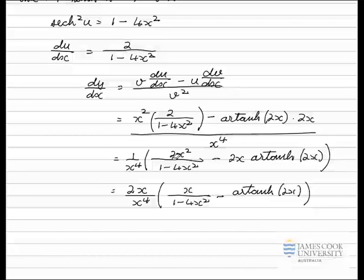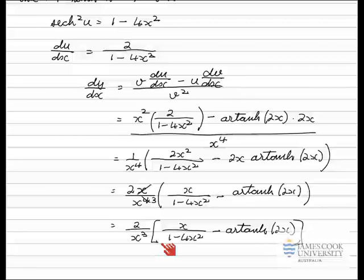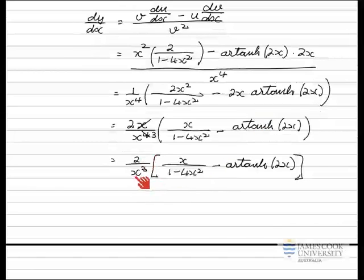We've taken 2x outside the first term, leaving x/(1 − 4x²), and outside the second term, leaving artanh(2x). Simplifying the x on top with one of the x's on the bottom gives x³ on the denominator. The final answer is dy/dx = 2/x³ times [x/(1 − 4x²) − artanh(2x)]. That's as simple as we can make it.